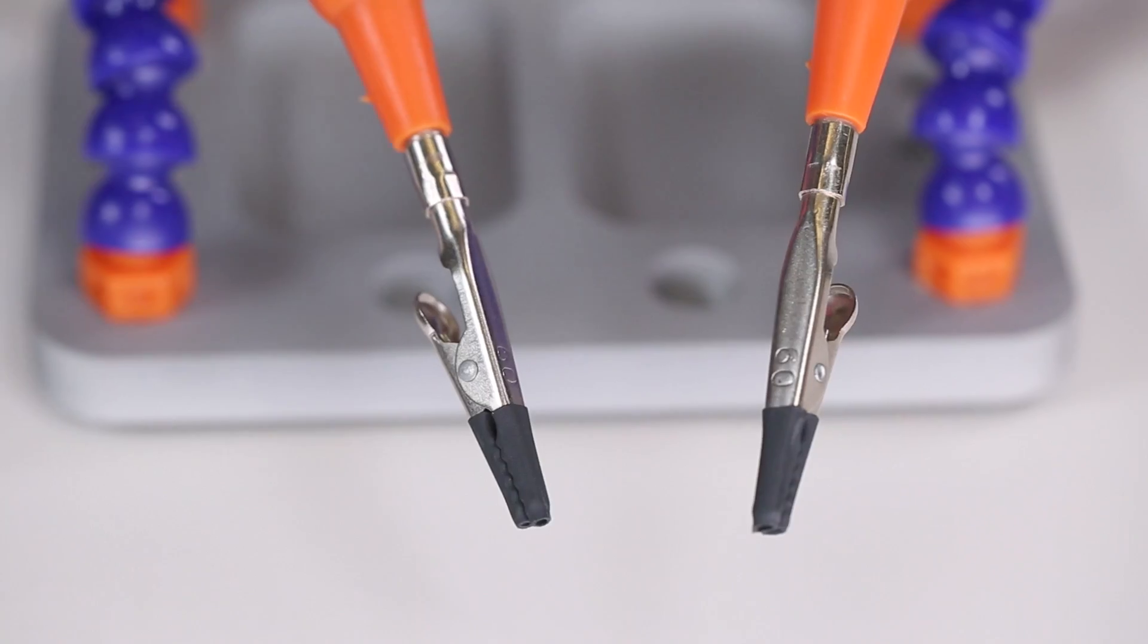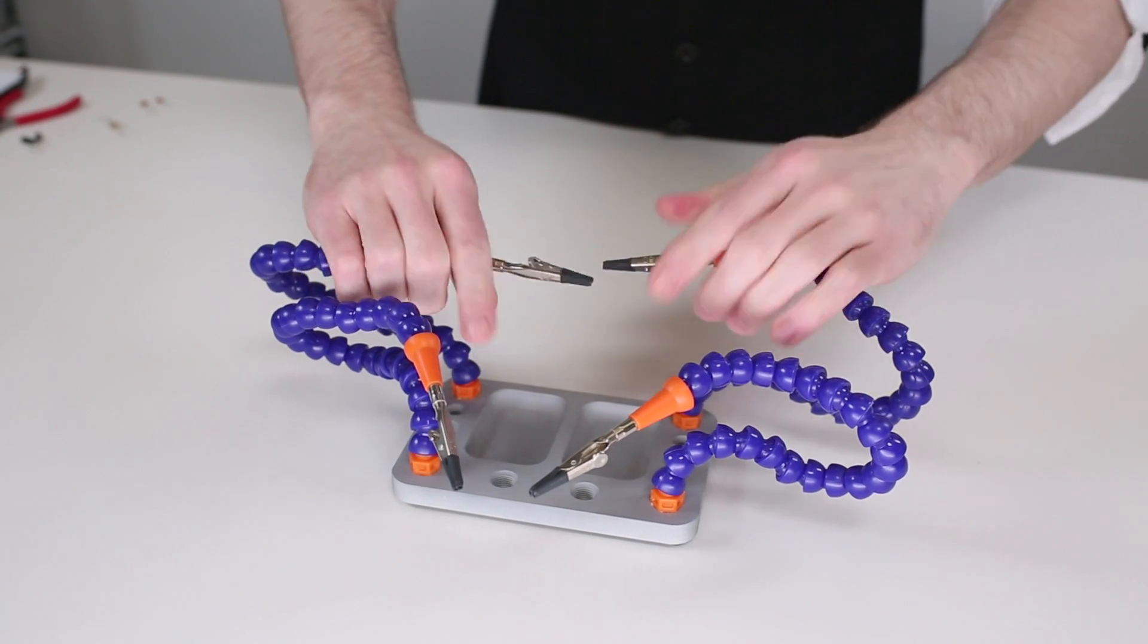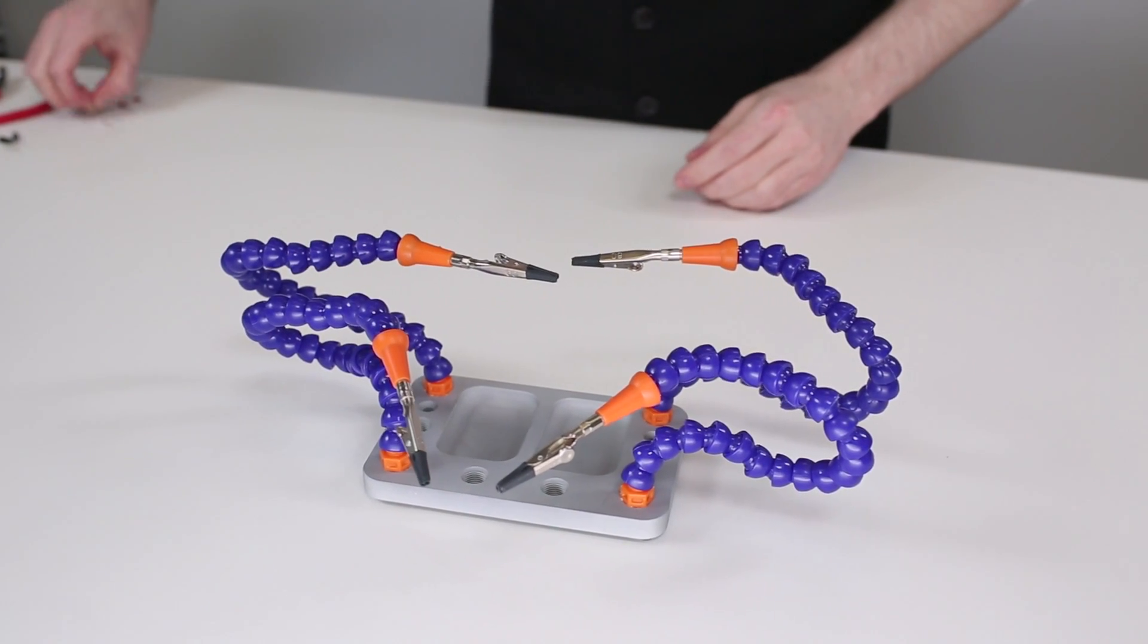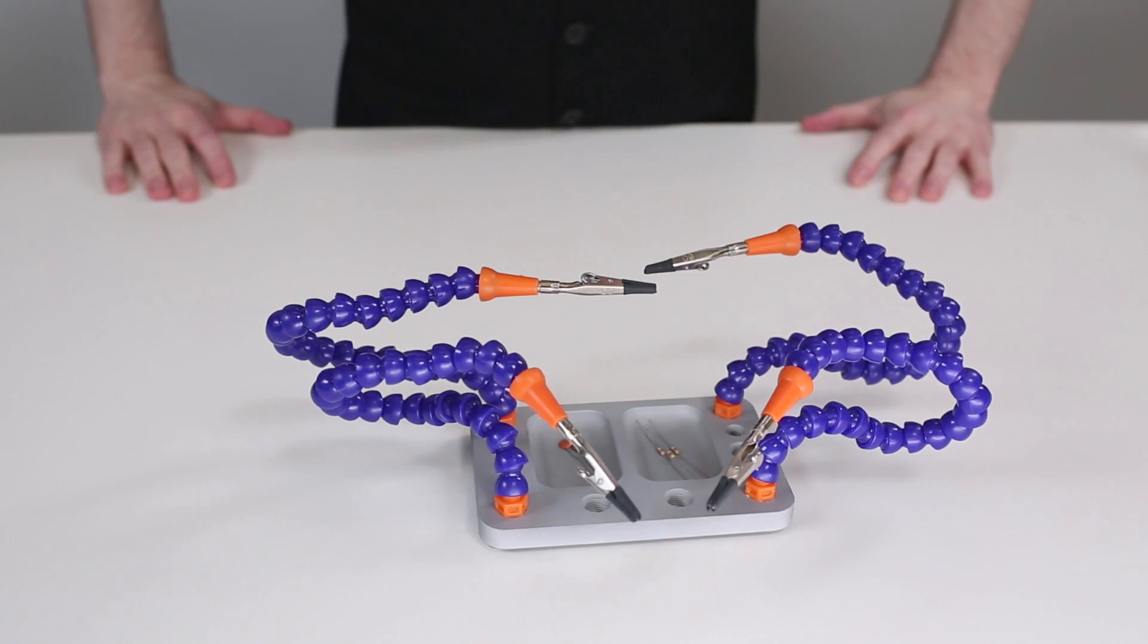And for a massive upgrade, look to this super fancy third hand. This beast has poseable tentacle-like arms with a lot of reach, plus a substantial base with trays for parts. Oh, and the jaws on this one come pre-dampened.